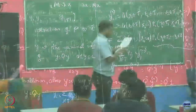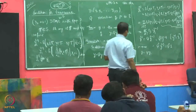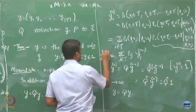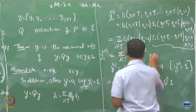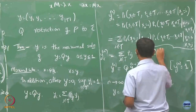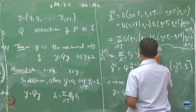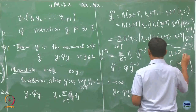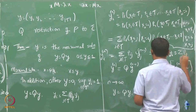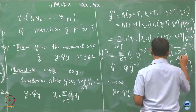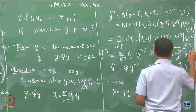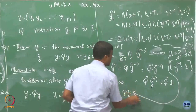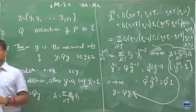So what I basically did is: after taking n tends to infinity, I have written Yi equals the sum over j in T of Pij * Yj. This is nothing but, compactly written, the relation Y equals QY.